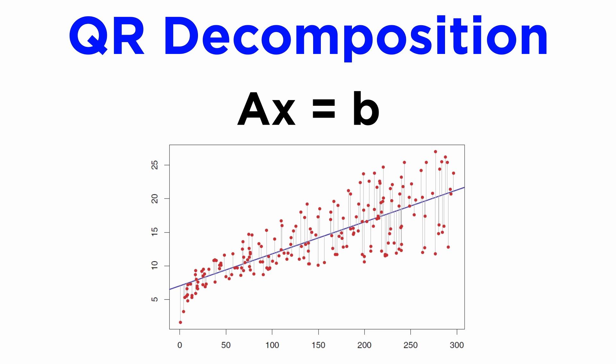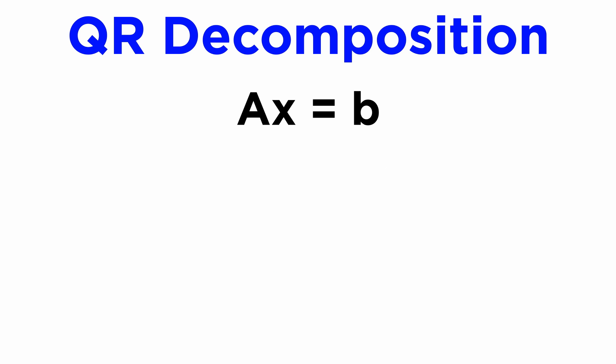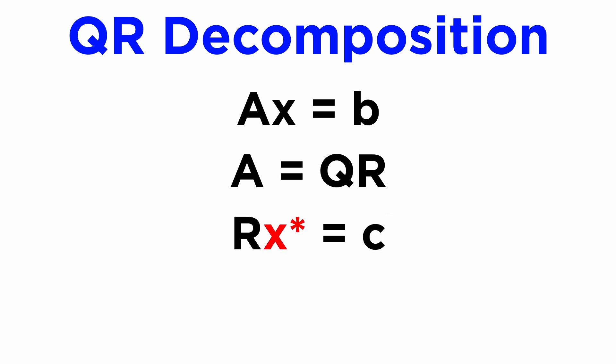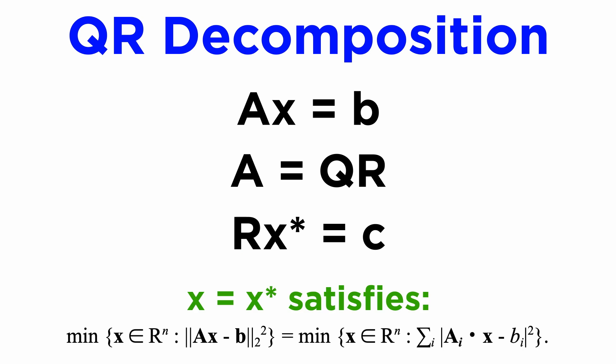This occurs, for example, when we want to find a line of best fit to a dataset with lots of data points. There is no one line that goes through every single point, but what we can do is find the line that minimizes the sum of squared distances from each point. To solve an over-determined system AX equals B, we write A equals QR so that RX star equals C, where C is Q transpose times B. Note that because Q is orthonormal, its inverse is just its transpose, which again simplifies the computations. We can evaluate C and then solve the system RX star equals C for X star using back substitution, as R is triangular. Here, X star represents the optimal solution for X that minimizes the squared Euclidean distance between AX and B.